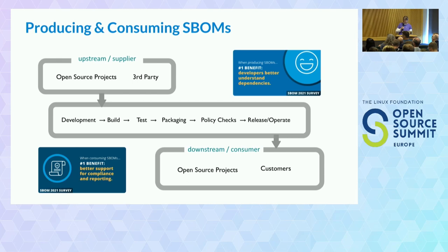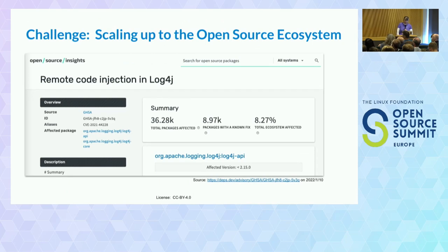However, the open source ecosystem is huge. Our challenge is how do we get to the stage where you've got this component being used throughout this whole ecosystem? There were 36,000 packages affected when looking at deps.dev for the log4j vulnerability. Because with open source you don't know who's downloaded and used your code, you don't know who's included your packages necessarily — and this is why it takes so much cost to remediate once it's out in the field.